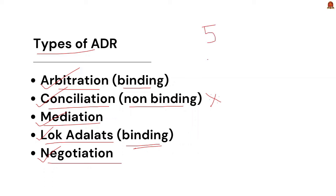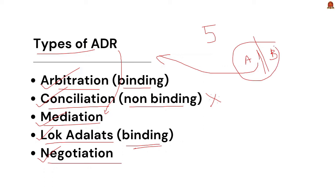Let me give an example to understand this better. Imagine two neighbors A and B who have a disagreement over the boundary of their properties. Instead of taking the issue to court, which can be time-consuming and expensive, they decide to use the alternate dispute resolution mechanism. They meet with a mediator — a neutral third party — who listens to both sides and helps them come to a mutual agreement, resolving the issue quickly and maintaining a good relationship without a lengthy legal battle.